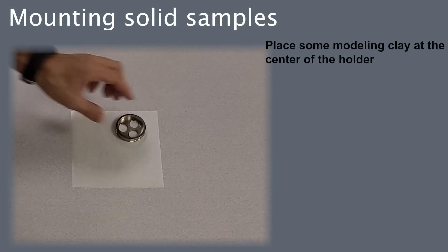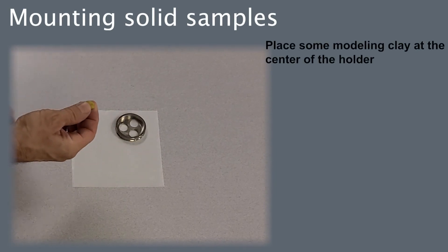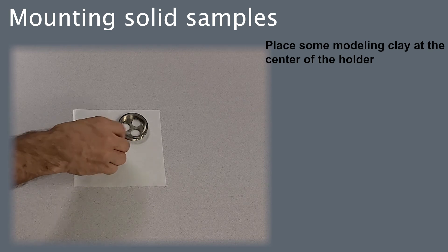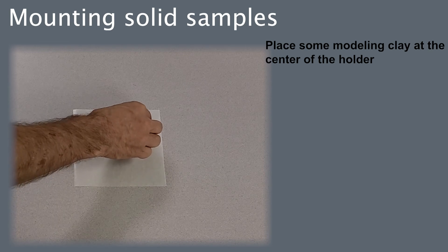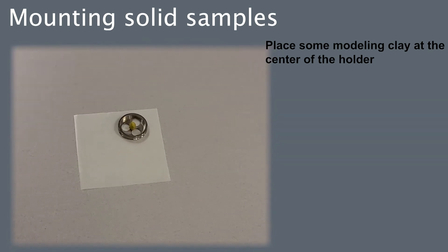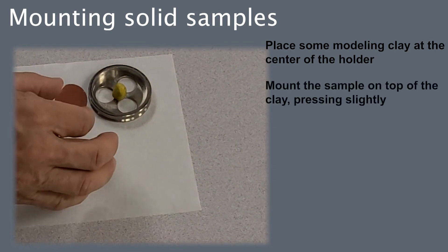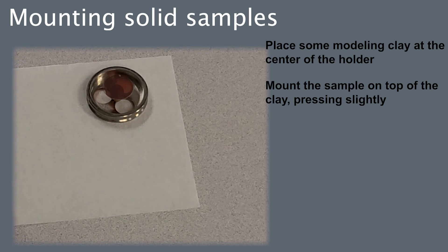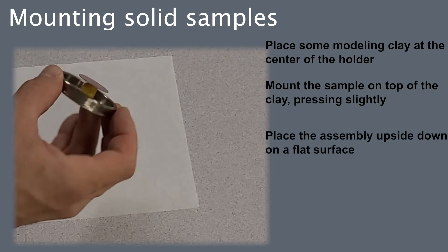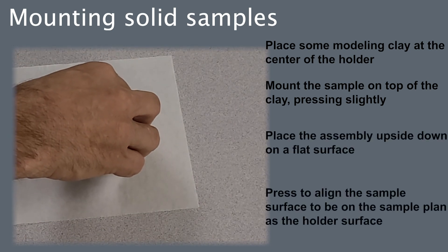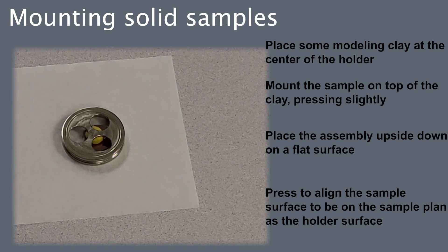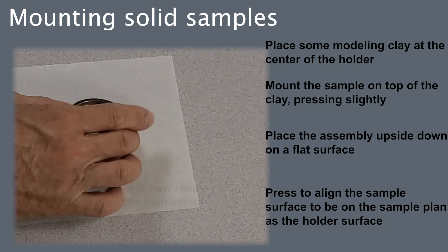Mounting solid samples. Place some modeling clay at the center of the holder. Mount the sample on top of the clay, pressing slightly. Place the assembly upside down on a flat surface. Press the assembly until the sample surface is in the same plane as the holder surface. The sample is now ready to load in the instrument.